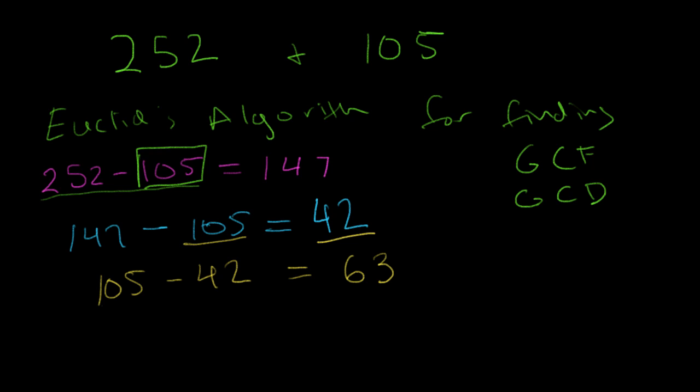We're going to continue doing this. We take the difference here, which is 63, and subtract. This time, the smaller number is not 105 anymore, it's 42. So we use that number. 63 minus 42 gives us 21.